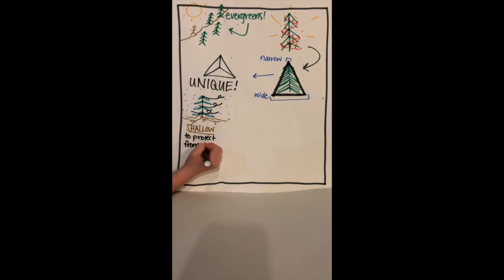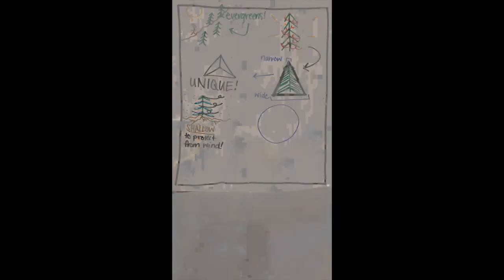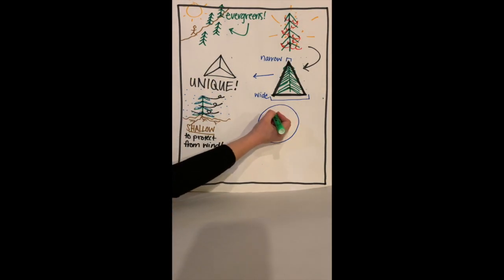Evergreens also tend to have shallow root systems. This makes them susceptible to being damaged by heavy winds. Being shaped like a pyramid, however, reduces their wind resistance, helping them stay upright, even in the heaviest winds.